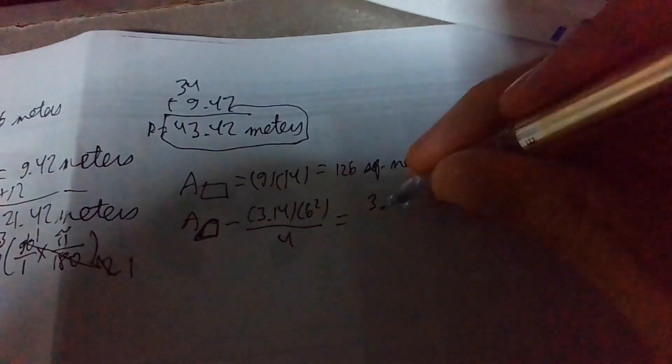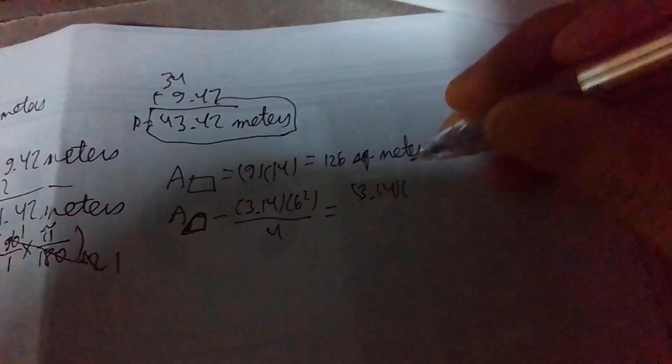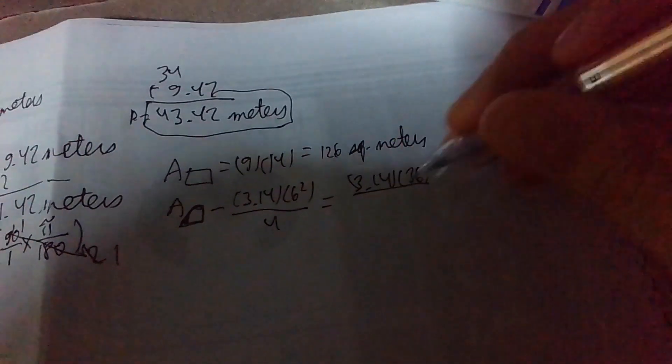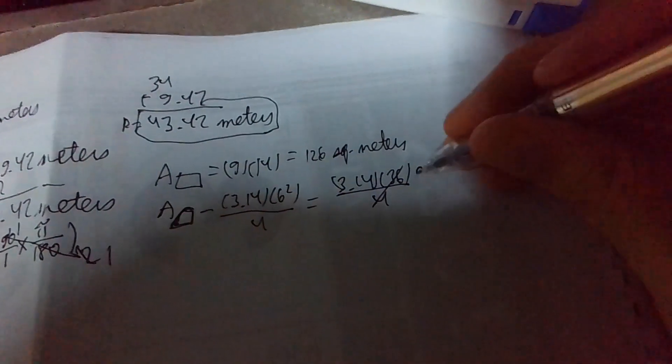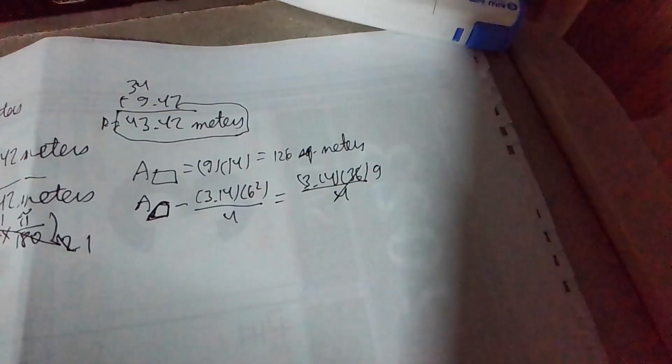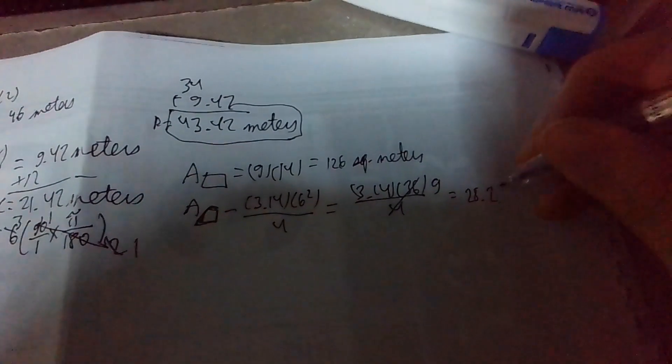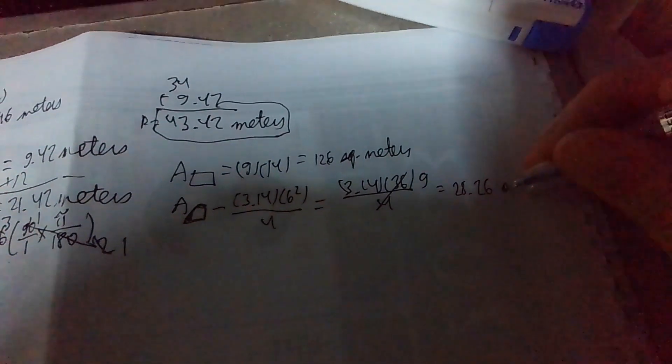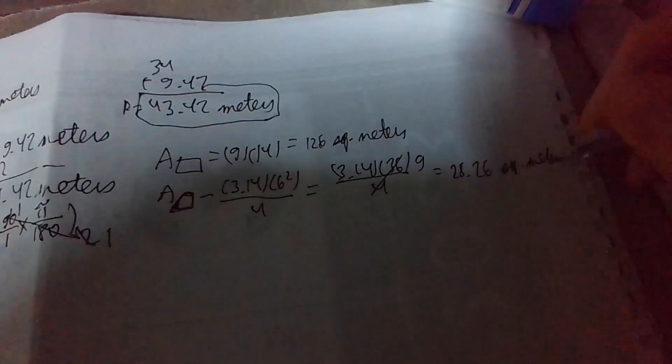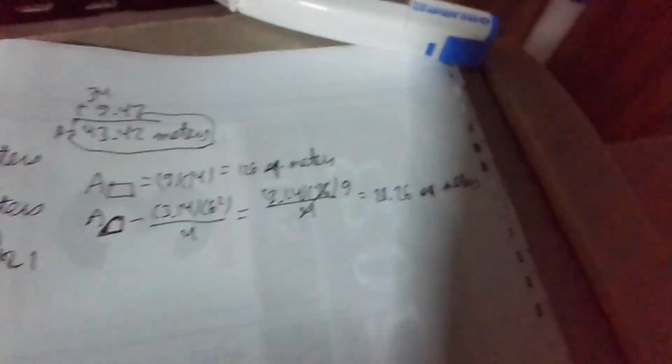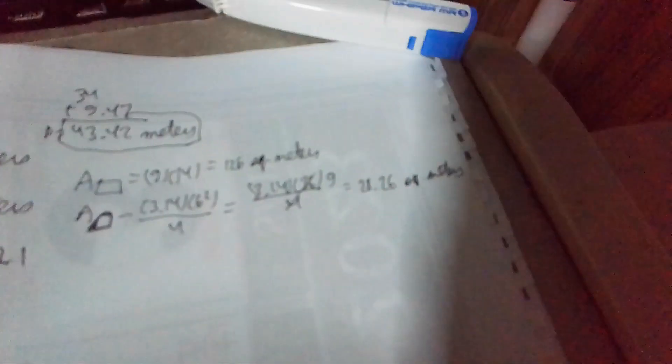The area of one-fourth of a circle is 3.14 or pi times the radius squared, which is 6 squared, divide by 4. This would become 3.14 times 36, divide by 4. We can cross out 36 and 4, which makes it 3.14 times 9. Therefore, it should be 28.26 square meters.